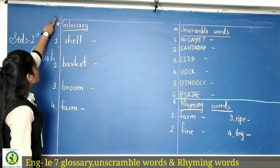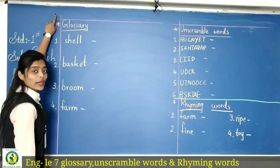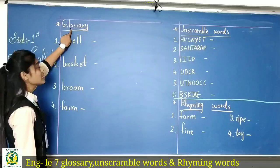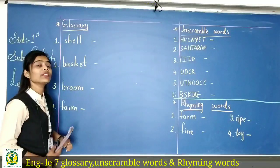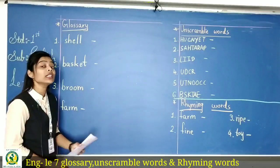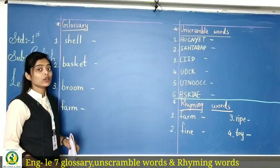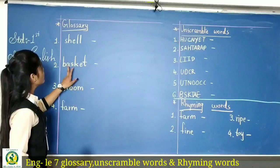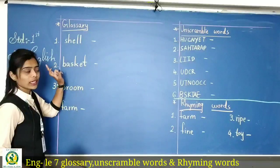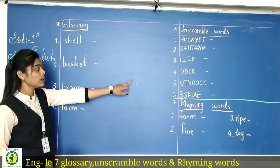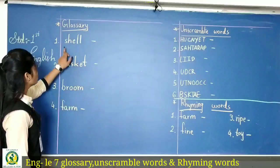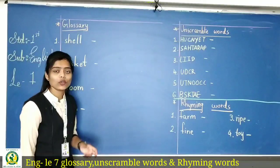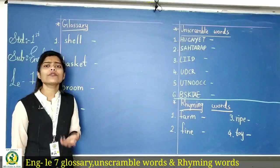Take out your English CW and open a new page. Write today's date and the heading 'Glossary'. Previously we wrote new words of lesson number seven — totally two pages. Today we will write glossary, unscramble words, and rhyming words. First, glossary: the first word is 'shell'. What is the meaning of shell?